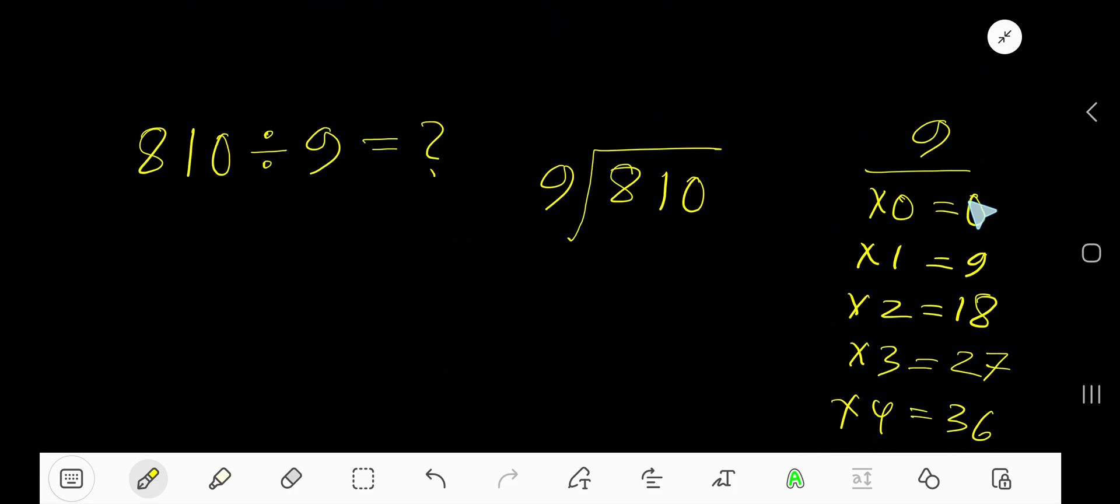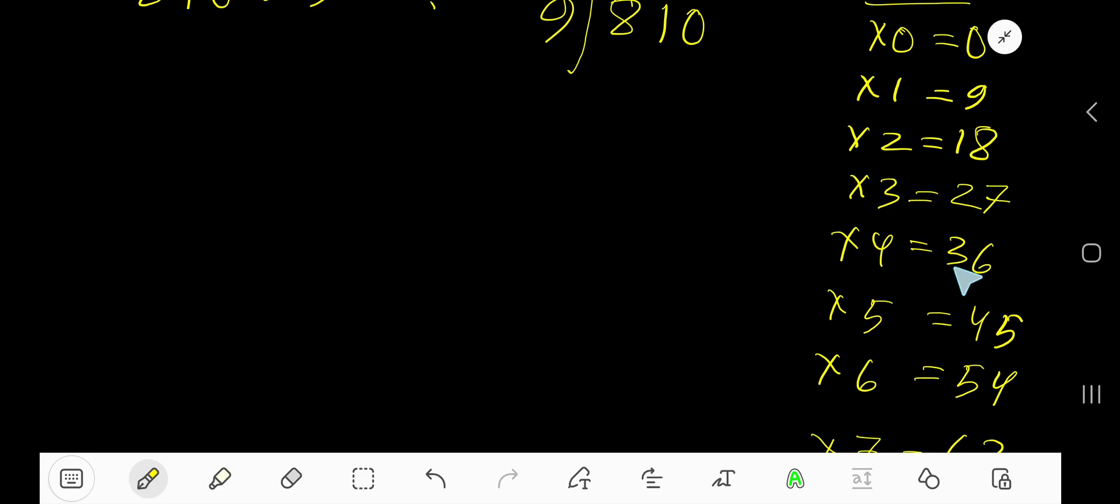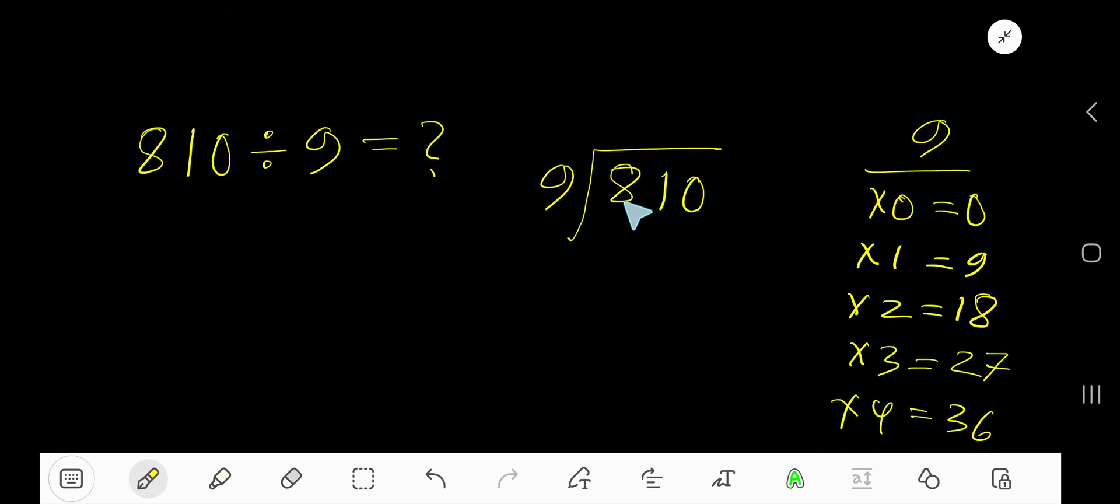To find out the multiplication table of 9 easily, just add 9 with the previous step. 0 plus 9 is 9, 9 plus 9 is 18, 18 plus 9 is 27, 27 plus 9 is 36, 36 plus 9 is 45, 45 plus 9 is 54.